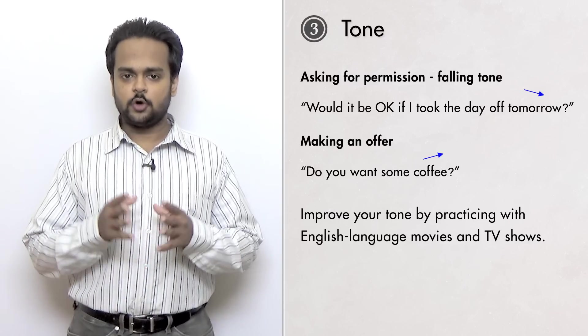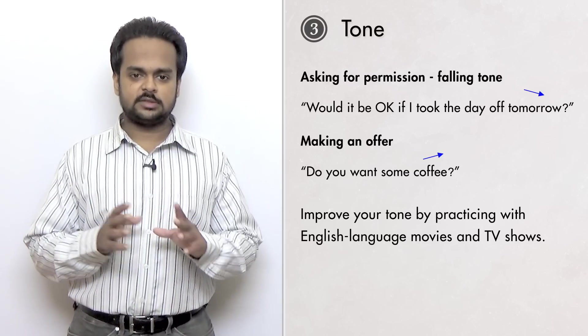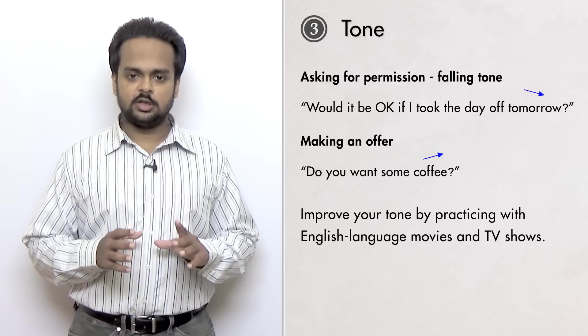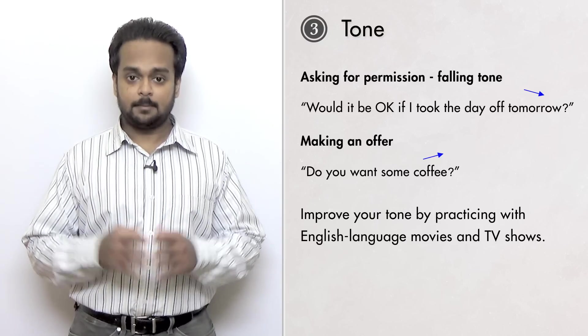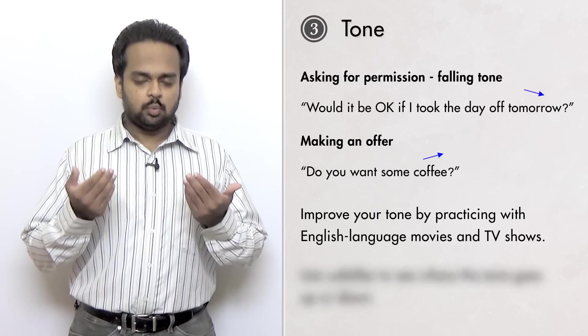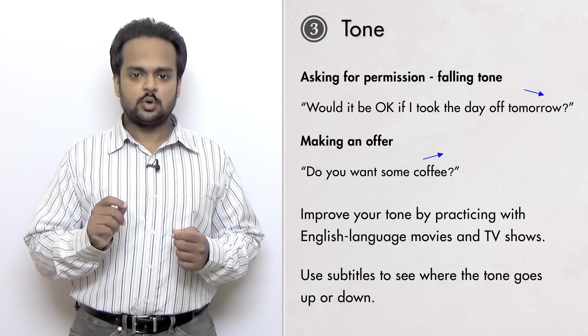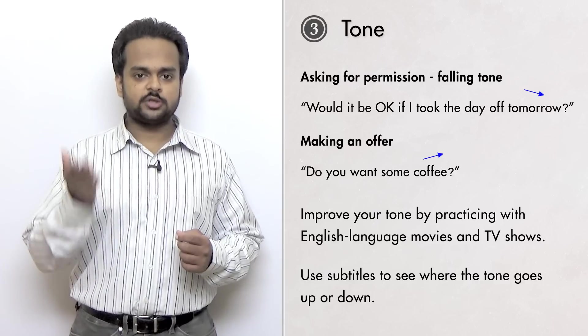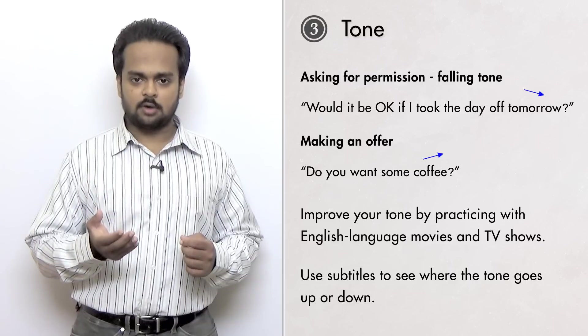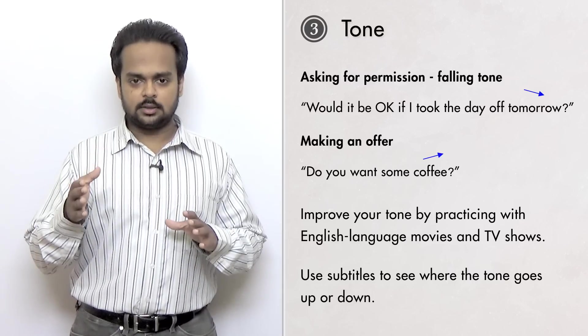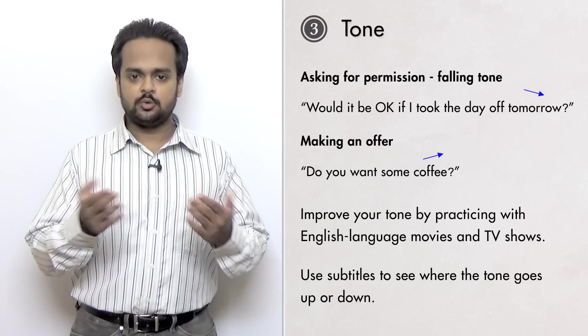A great way to improve your own intonation is to practice with English language movies and TV shows. As you listen to the dialogue, notice the tones the speakers are using. Practice along with them. It will be very helpful to have subtitles when you do this, because you can find out where the tone goes up or down. If you're watching on your computer or your smartphone, you can even rewind and practice saying the same sentences again and again until you get the tone right.